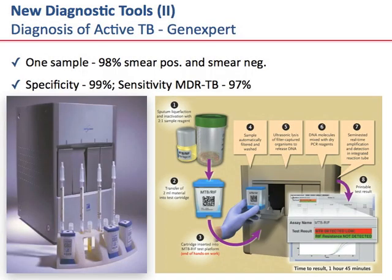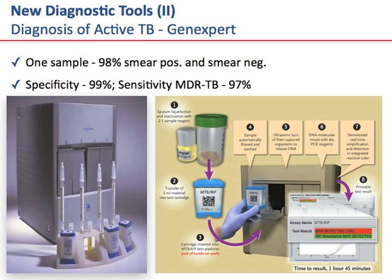What has been transformative is the widespread use of the GeneXpert. This is a device produced by Cepheid in which sputum is mixed two to one with a liquefying reagent, and the cartridge is placed in essentially a robot. Within two hours it provides the diagnosis of TB and also whether there is rifampin susceptibility or resistance. One sample identifies 98% of the smear positive and 73% of the smear negative cases. Specificity is almost 100%, in part because the gene being amplified, rpoB, is relatively restricted to M. tuberculosis. Sensitivity for the diagnosis of MDR-TB is excellent as well.